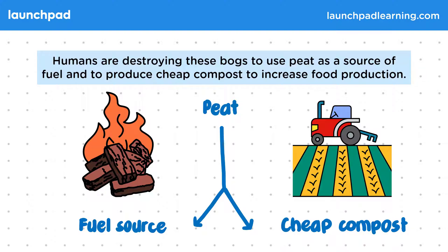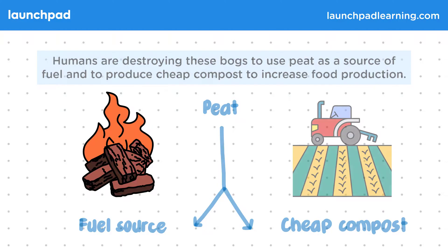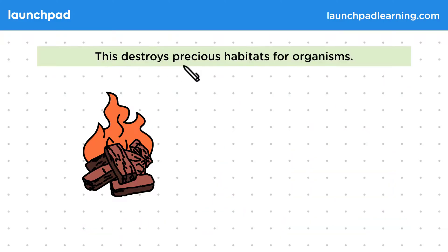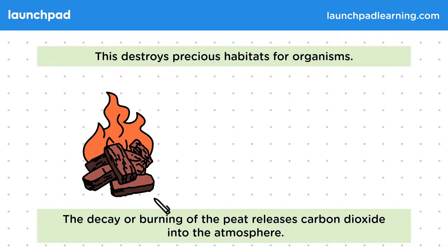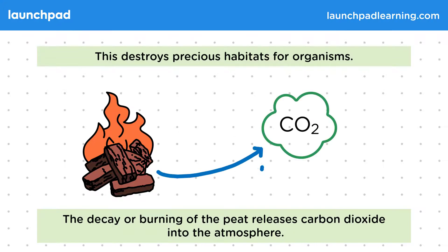What problems are associated with this? This destroys precious habitats for organisms. The decay or burning of the peat releases carbon dioxide into the atmosphere. The release of carbon dioxide into the atmosphere is a problem because carbon dioxide is a greenhouse gas. This is covered in more depth elsewhere in this course and is also covered in Chemistry GCSE.